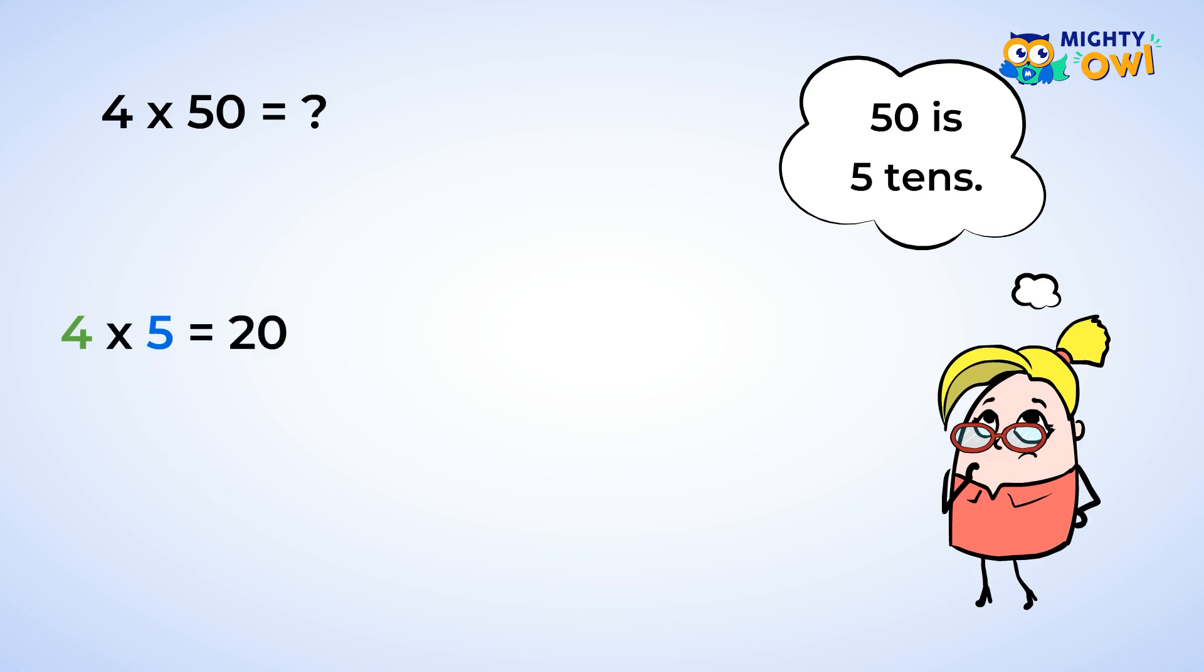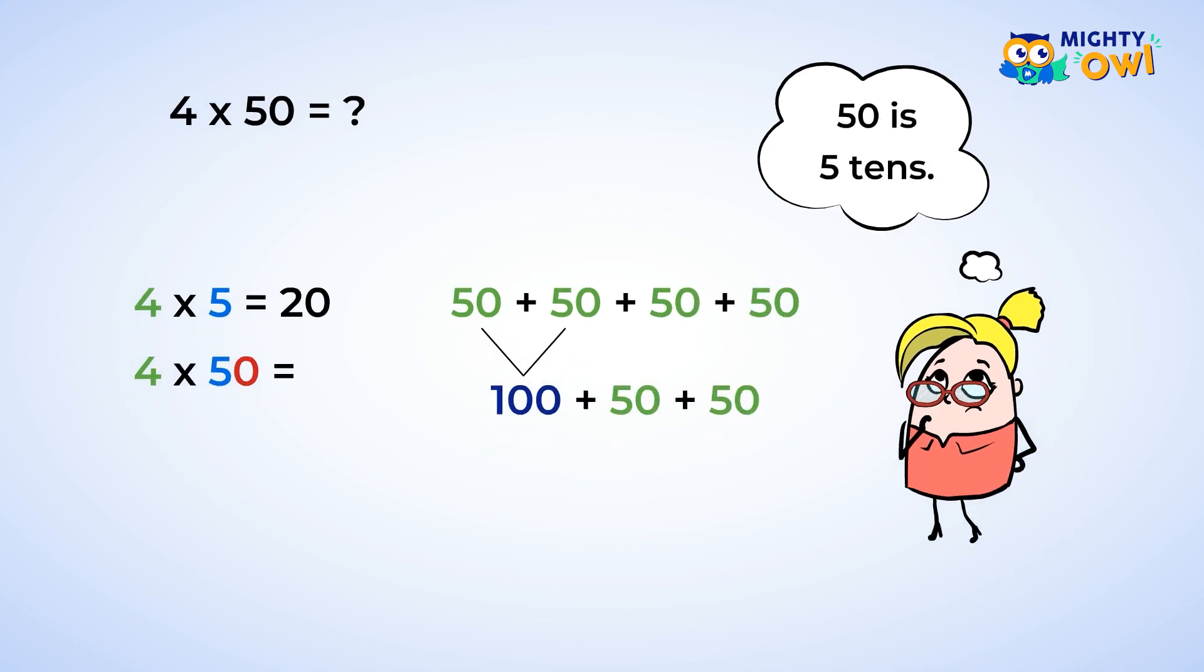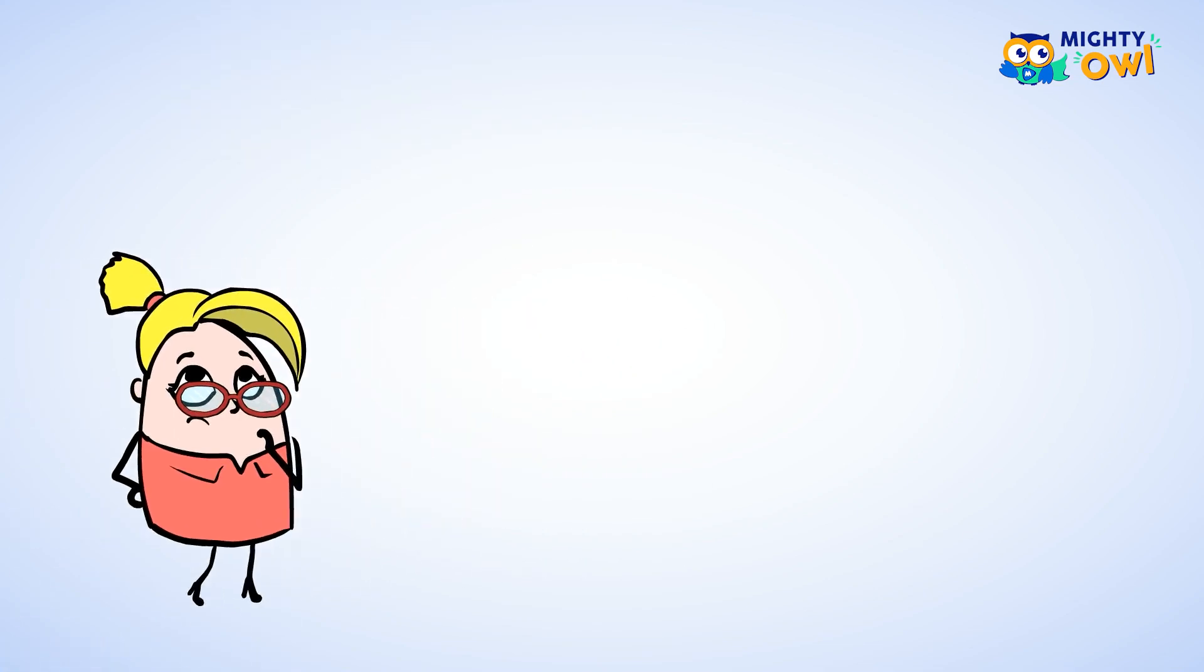That wasn't too hard, was it? Now, four times fifty? Four groups of fifty. Whew! That is a large number. Fifty plus fifty is one hundred. One hundred plus fifty is one hundred fifty. Wow, if we did that as an array, it would be huge.